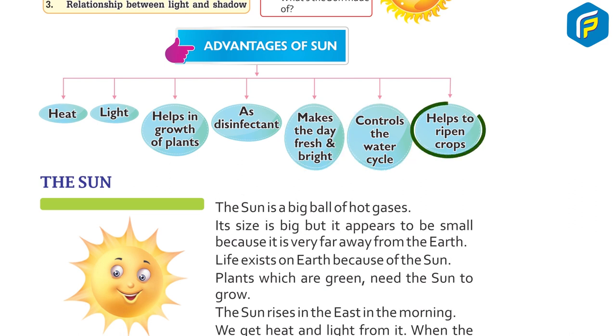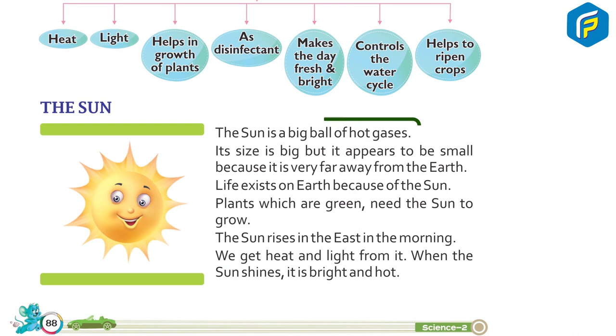The Sun. The Sun is a big ball of hot gases. Its size is big but it appears to be small because it is very far away from the Earth. Life exists on Earth because of the Sun.